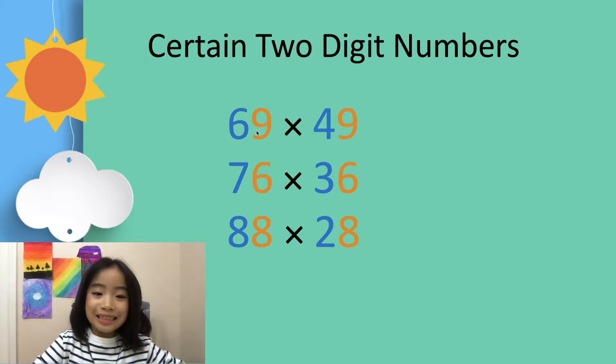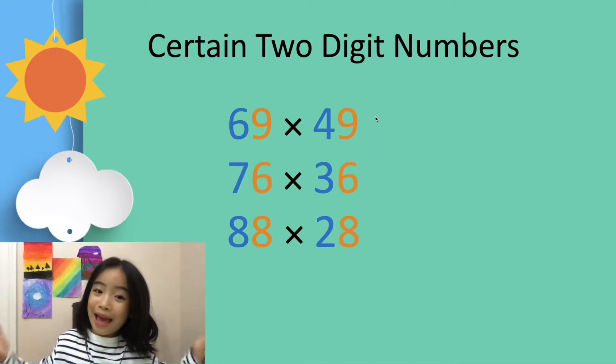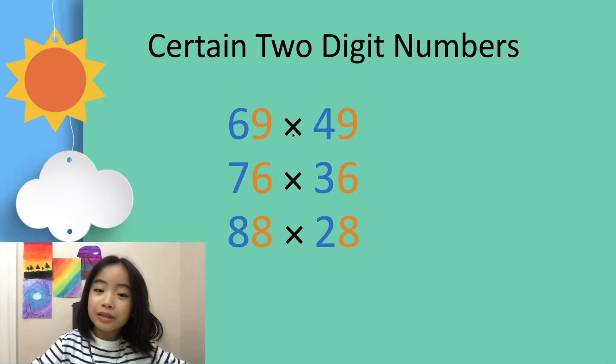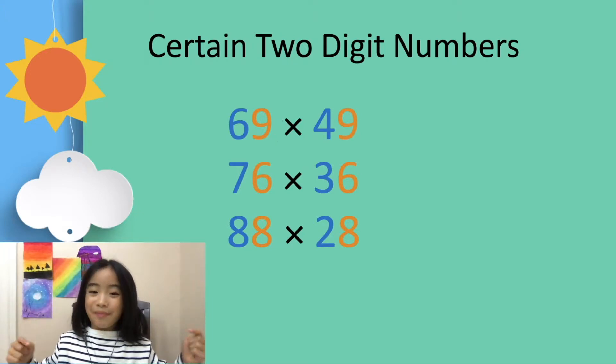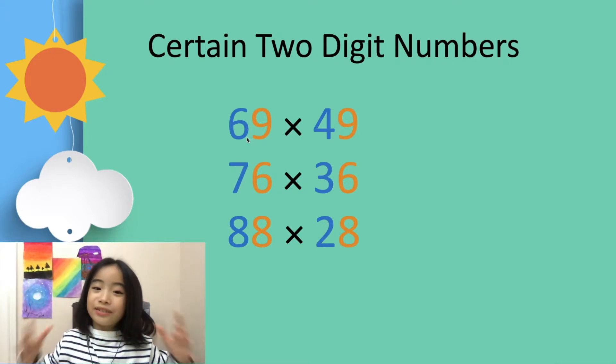Let's use 69 times 49 as our example. Do you spot the pattern? Well, they both end in 9, and 6 plus 4 equals 10. The pattern is that the ones digit are the same and the tens digits added together equal 10.